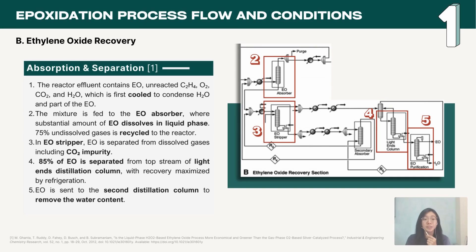Next, the reactor effluent is cooled to condense water and part of the ethylene oxide. In the absorber, a large amount of ethylene oxide dissolves in the liquid phase while 75% of undissolved gases is recycled to the reactor via the top stream.